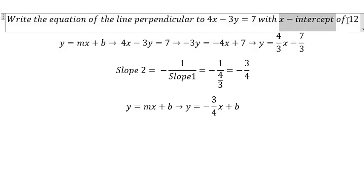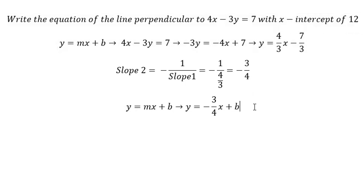The x-intercept of 12 means when y = 0, x = 12. So we put 12 here and 0 here to find the value of b.